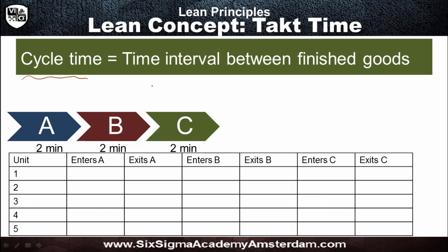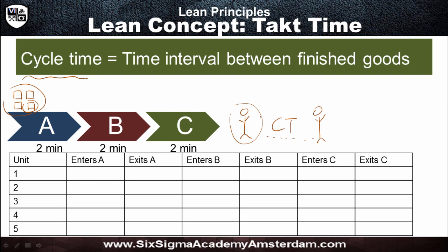Cycle time is closely related to takt time, but cycle time is the time interval between finished goods. Suppose we have a process that makes from raw materials some end product — maybe some kind of a teenage mutant ninja hamster action figure. The time that passes between one action figure being completed and another one being completed is basically the cycle time. If it takes three or four seconds between two finished goods, that is the cycle time.